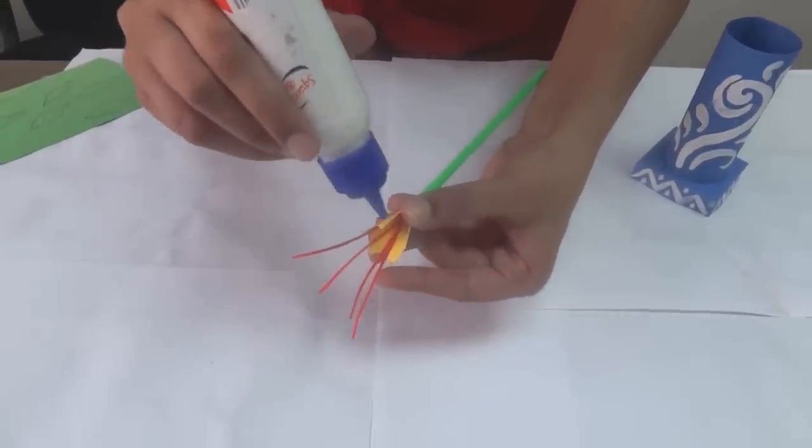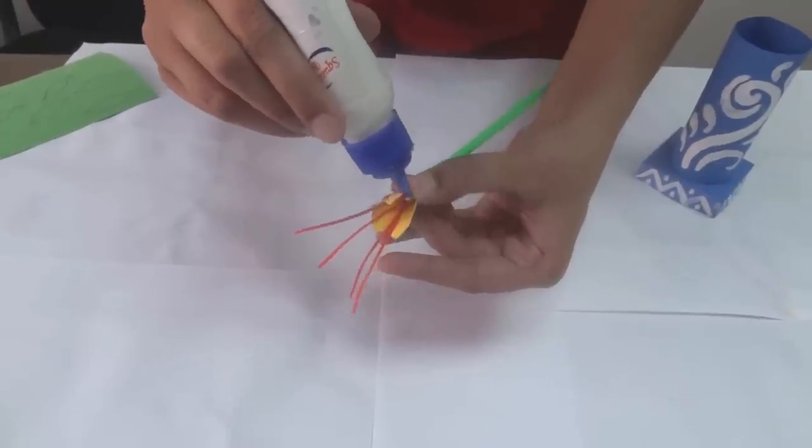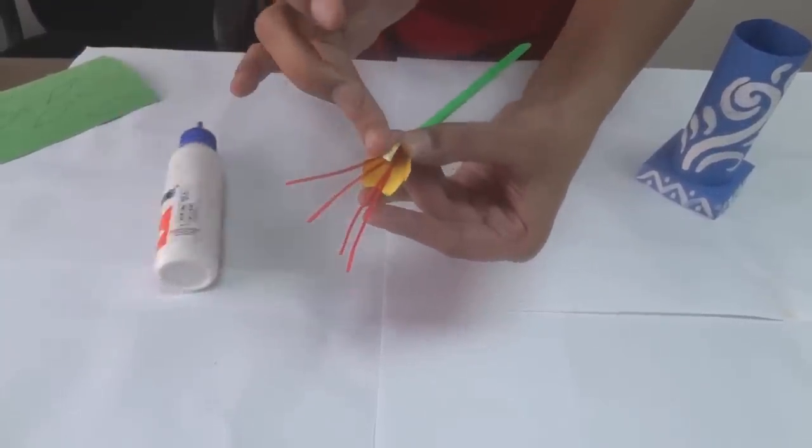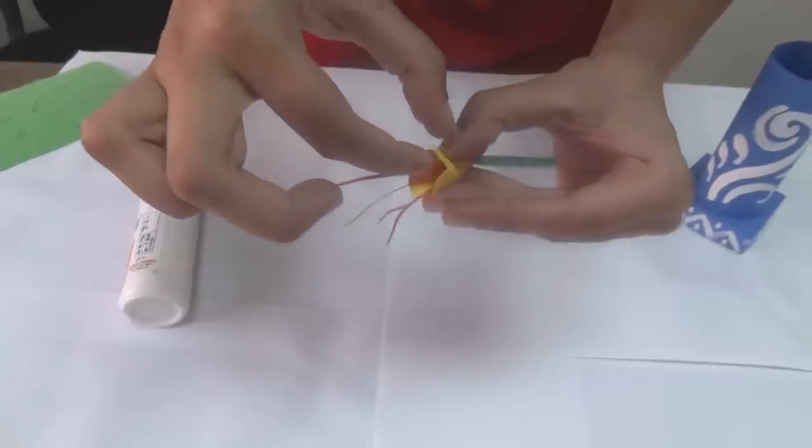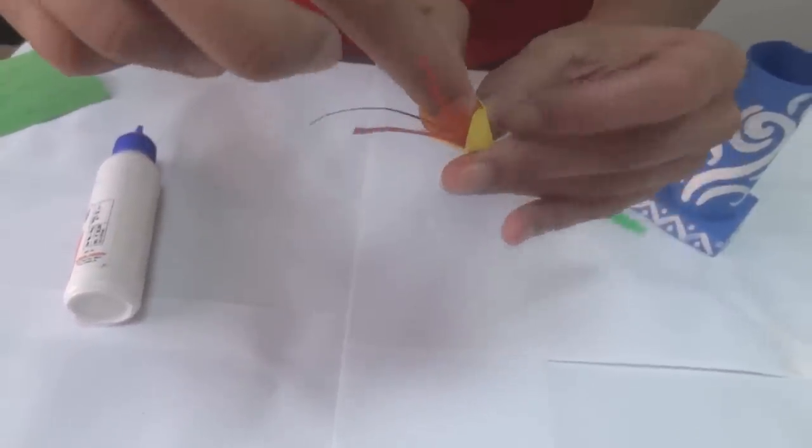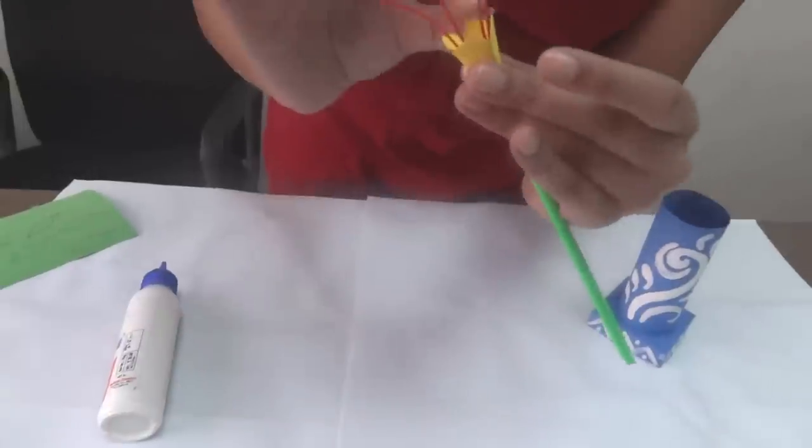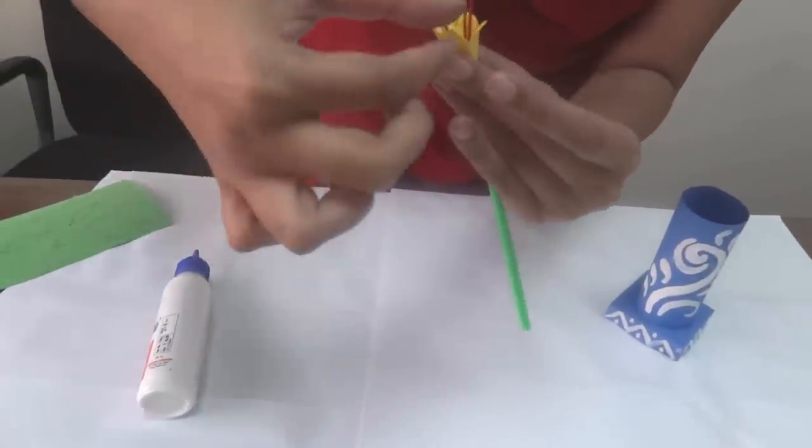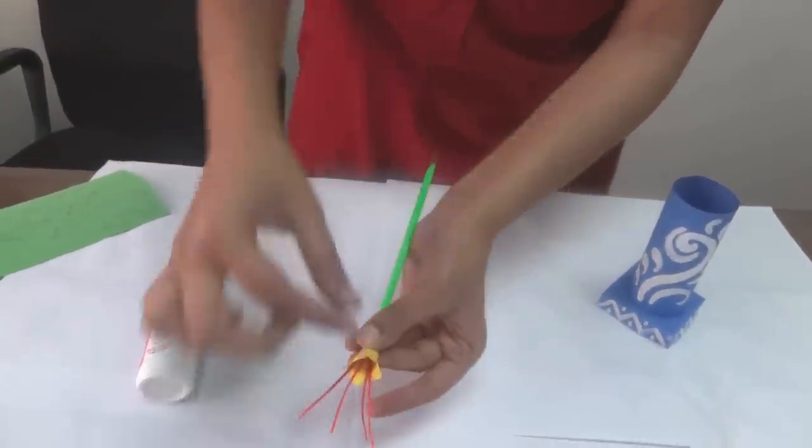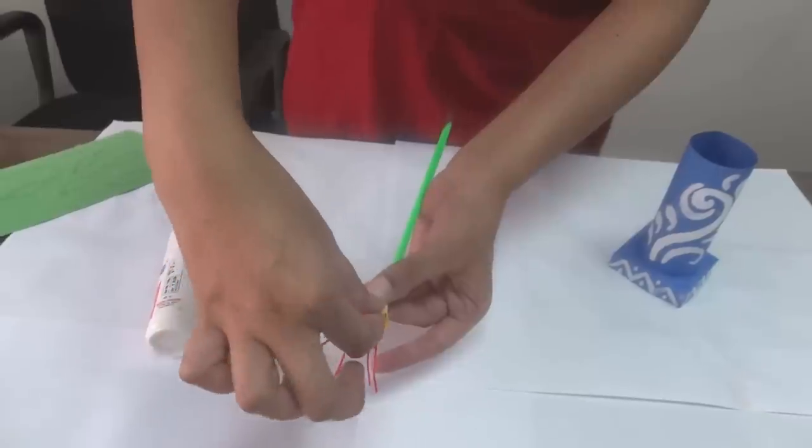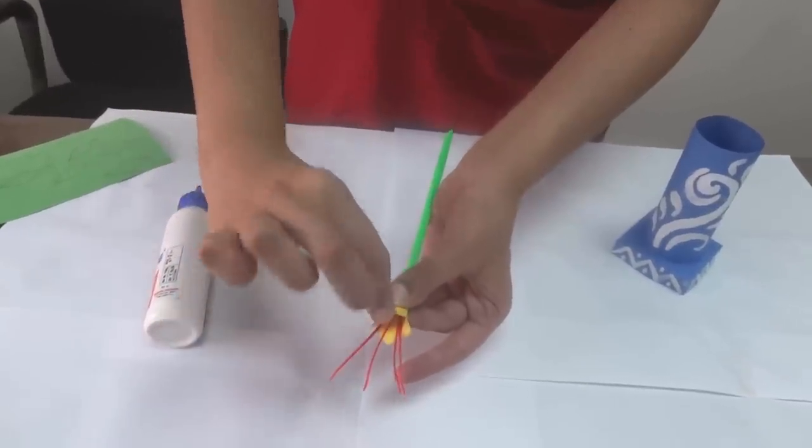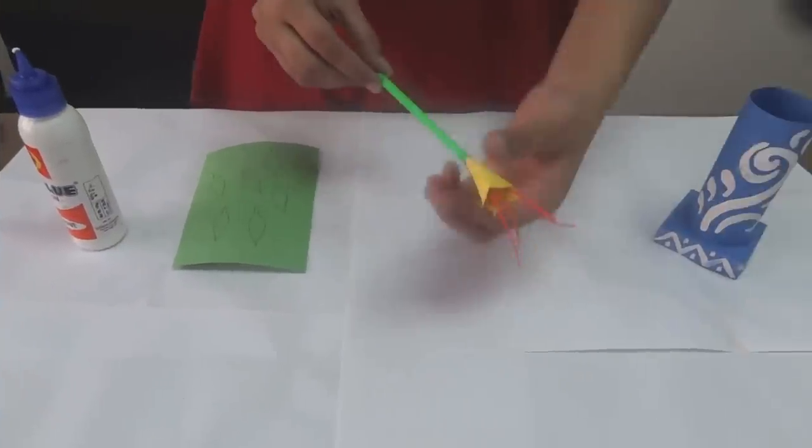Put some glue and paste the edges. Slightly curl the petals like this. Just hold it so that it pastes firmly. So we have a flower now.